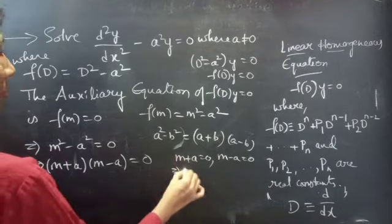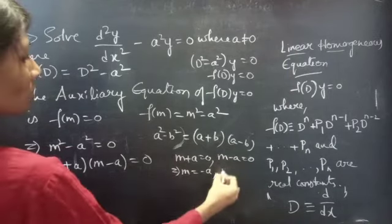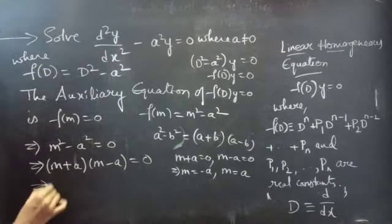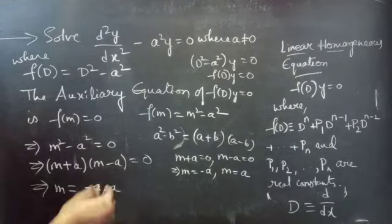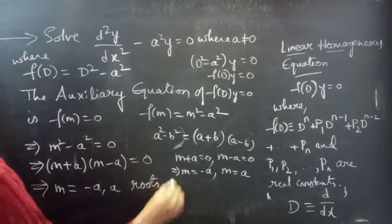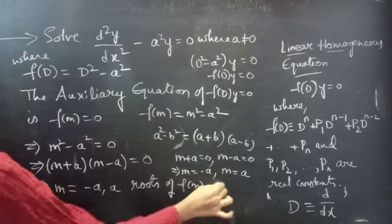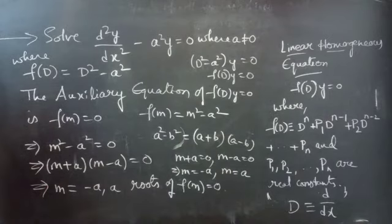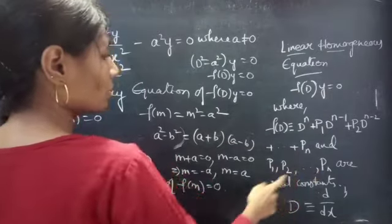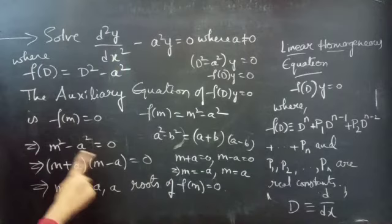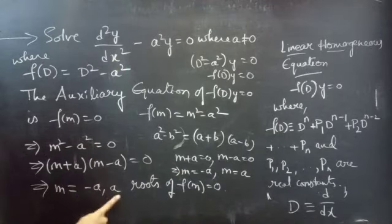From m + a = 0 we get m = −a, and from m − a = 0 we get m = +a. So the roots of f(m) = 0 are m = −a and m = +a, which are real and distinct. Here, a is a real constant, consistent with the standard form of such equations.